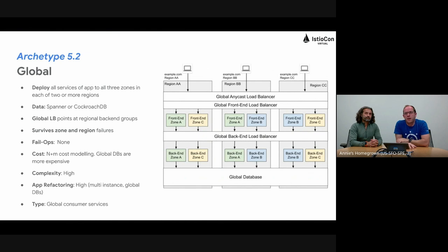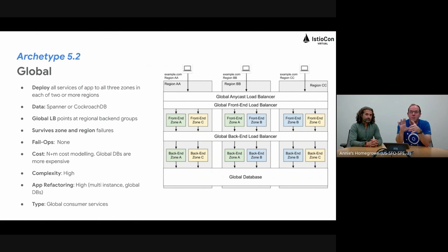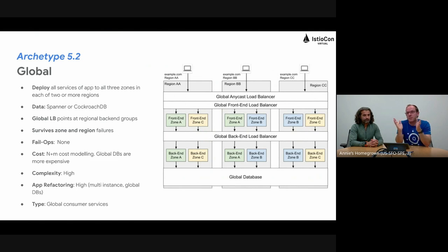The last one is the global model — I call it the Google model because many services inside Google are built this way. You deploy your application to all regions and all zones inside those regions. We're surviving both zone and region failure, and the important part is that failops is now nothing — it just keeps working. If a zone goes down, no big deal; if a region goes down, also no big deal. You do need to ensure you have the capacity in place using N-plus-M cost modeling to survive a certain number of zone and region failures. This tends to be for global consumer services — if you have something used by billions of people, this is the model to choose.